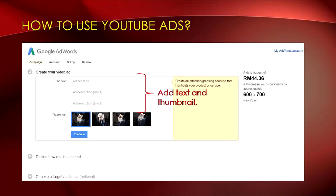Next, you need to enter the information for your text ad. Ad text includes a headline and two lines of description explaining what your ad is about. The ad text and descriptions are extremely important when you want to grab a customer's attention — be short and straight to the point. You'll want to key in punchlines that will increase engagement or click-through rates. Then choose a thumbnail you'd like to display to your audience.